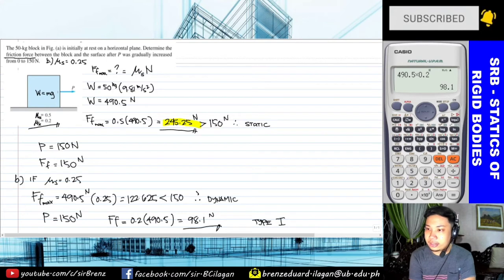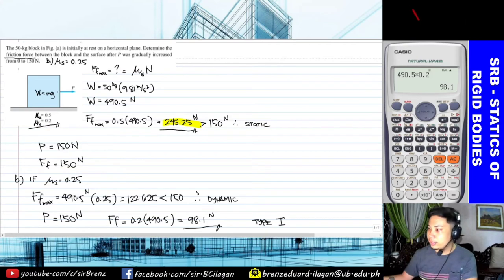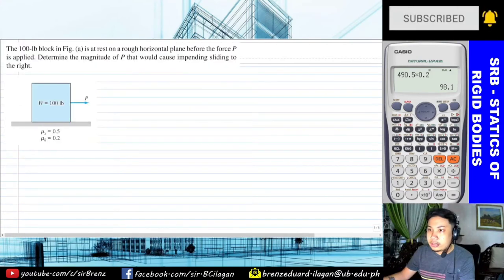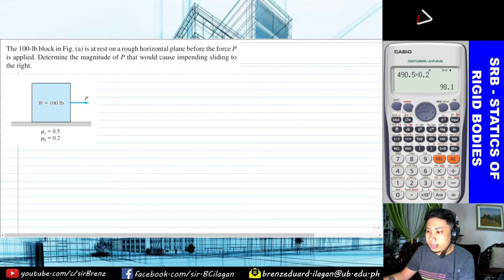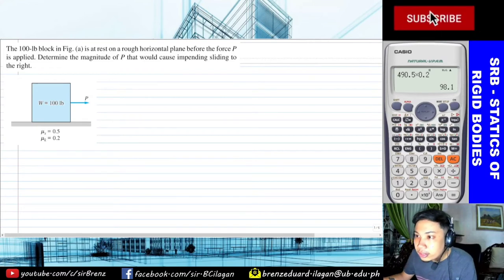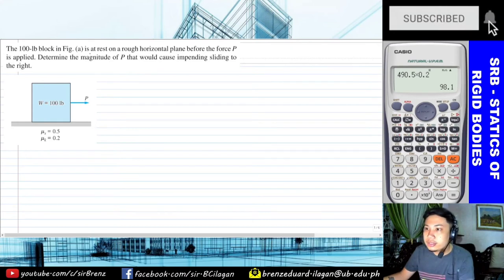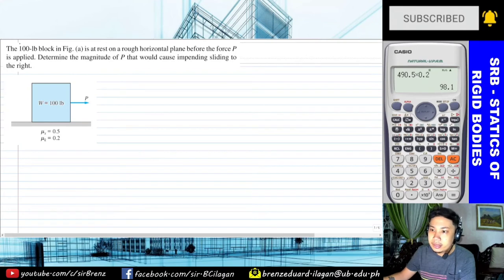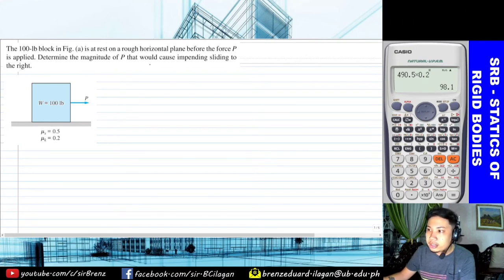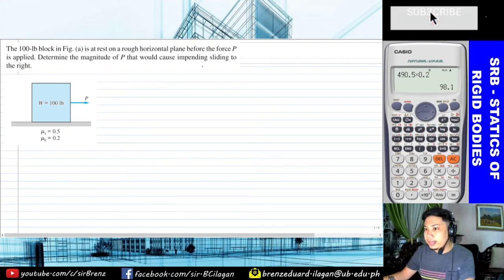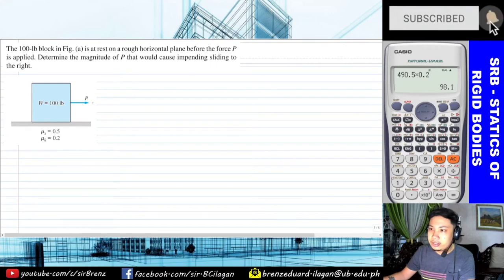Now let's solve what falls under Type 2 — the most common type of problem in friction. For the second problem, let's read it: The 100 pound block shown in the figure is at rest on a rough horizontal plane before force P is applied. Determine the magnitude of P that would cause impending sliding to the right.